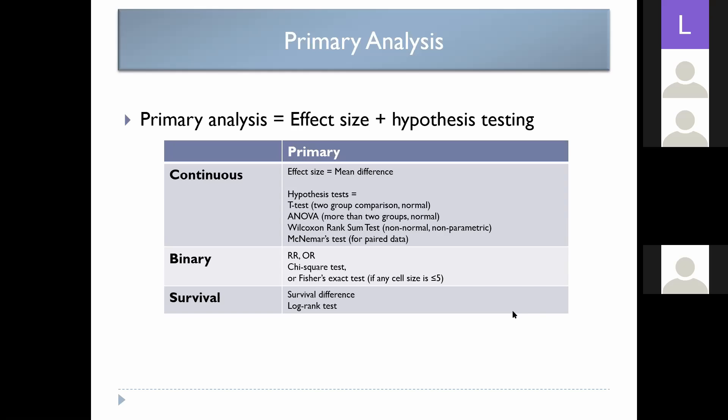If you don't have enough sample size to do a chi-square test, there's a low-sample-size version called Fisher's exact test — use it if any cell in your two-by-two table has fewer than five participants. For survival outcomes, your effect size is the survival difference — for example, 77% five-year survival with standard VDC for Ewing sarcoma versus 85% with compressed VDC, giving an 8% survival difference. The log rank test is your hypothesis test of choice to see if that was produced by more than chance alone.